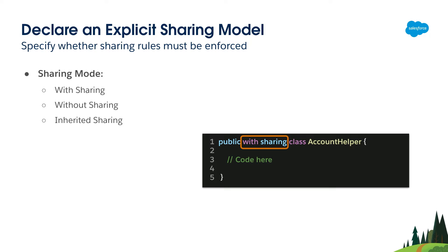Apex is running in system mode, which means it gives access to records and permissions. So you should declare a sharing model to make sure that the user has access to the records they need to work on. There are three sharing modes: with sharing ensures the user has access to the records they are working with; without sharing does not enforce sharing rules, so you use it when you want the user to have access to all records; and inherited sharing depends on the calling class's sharing mode.